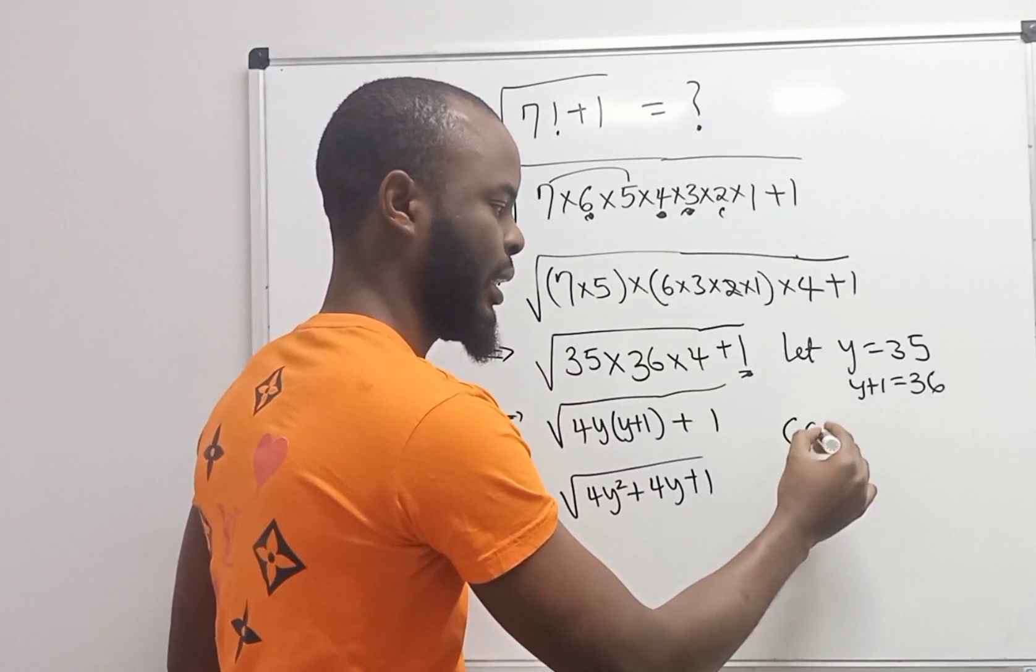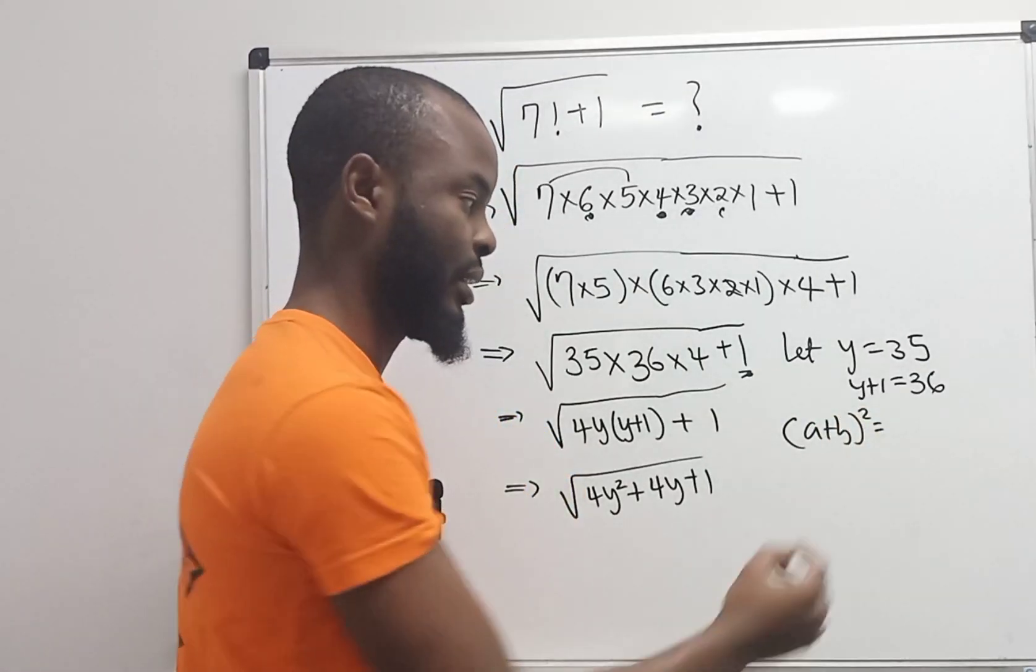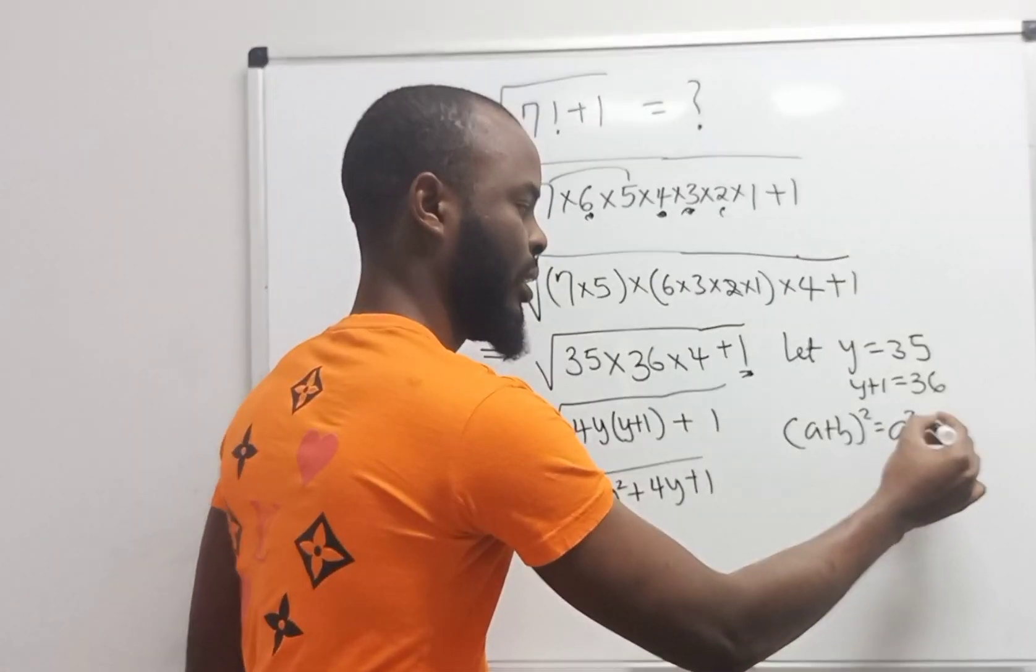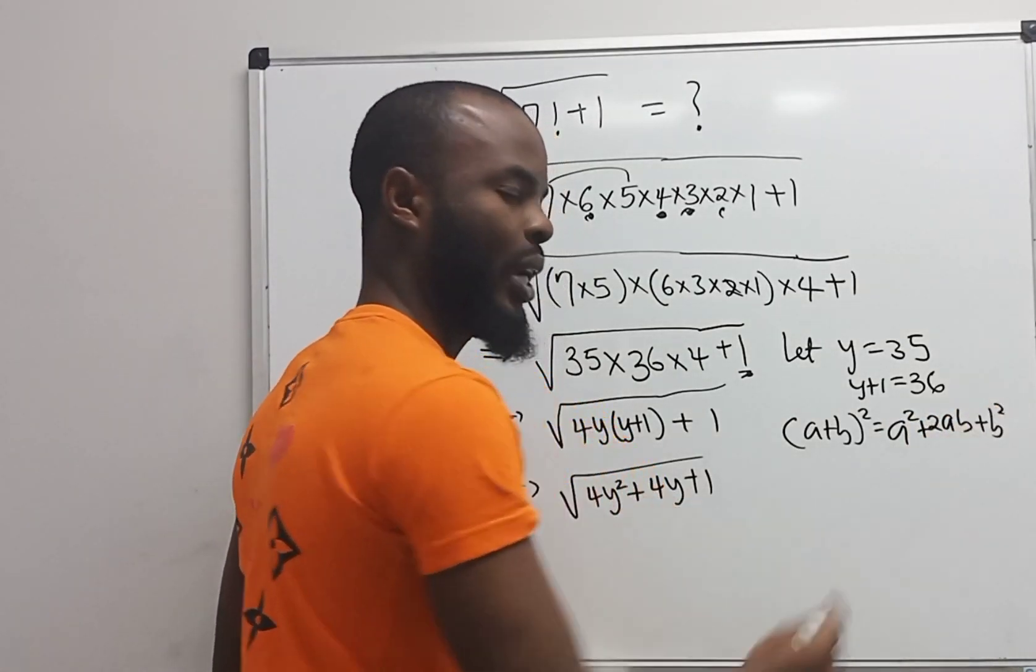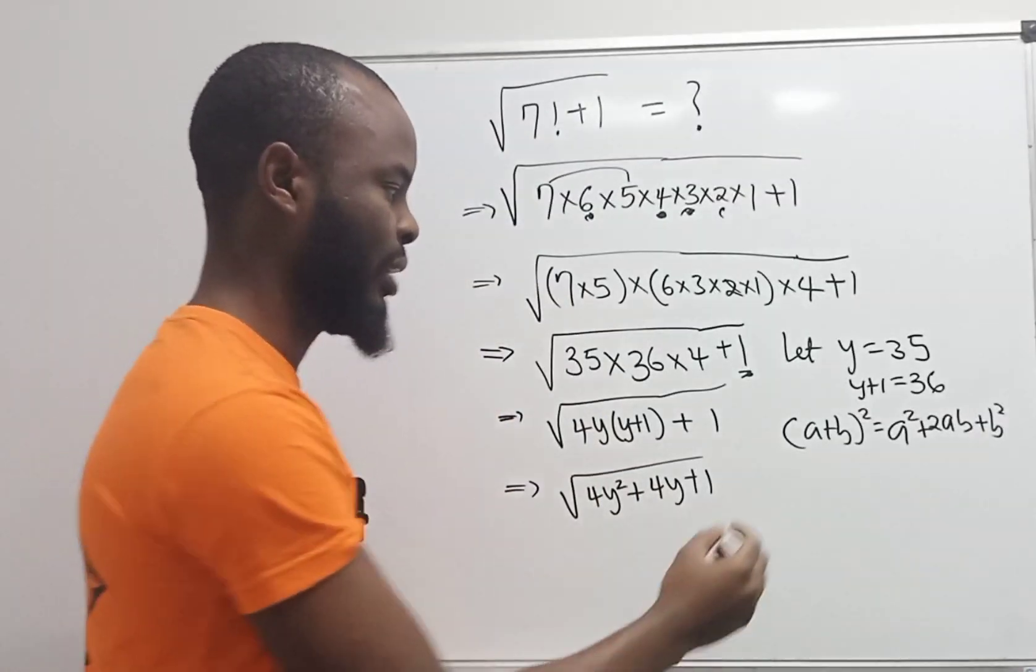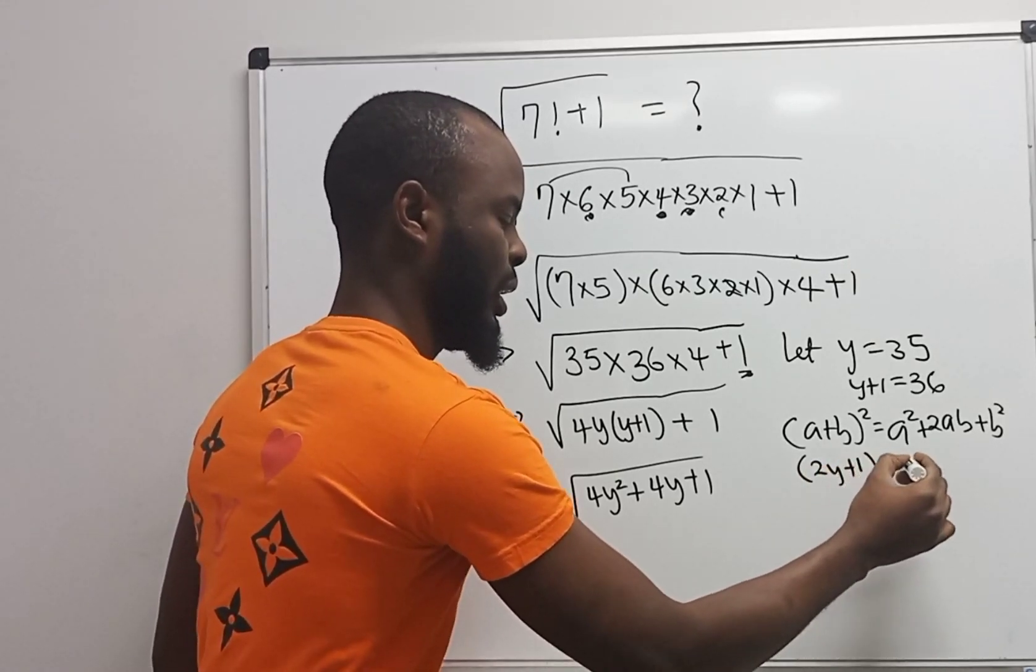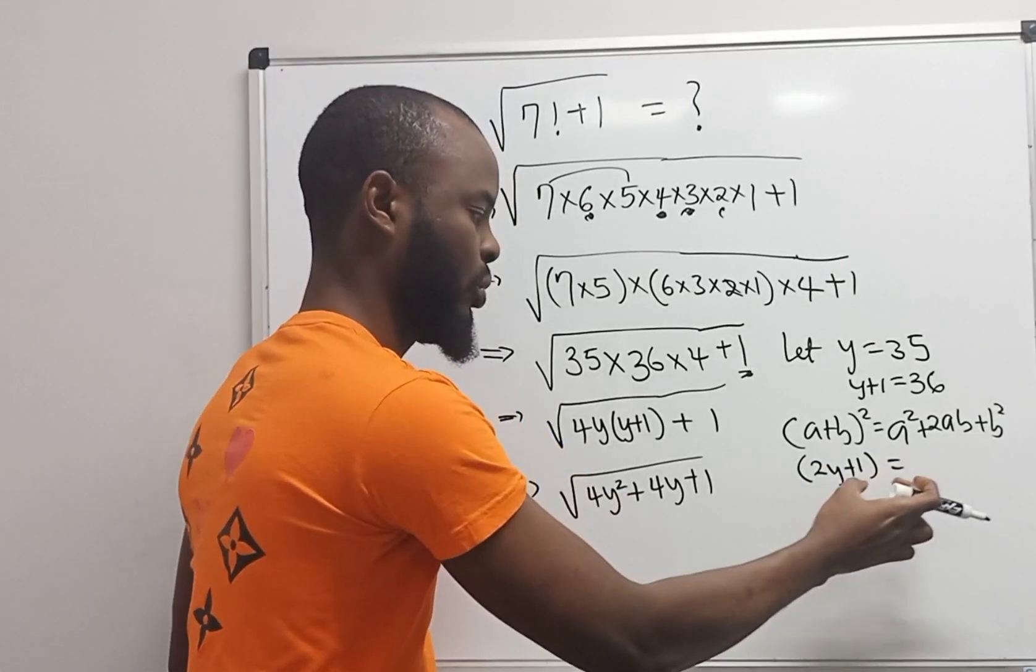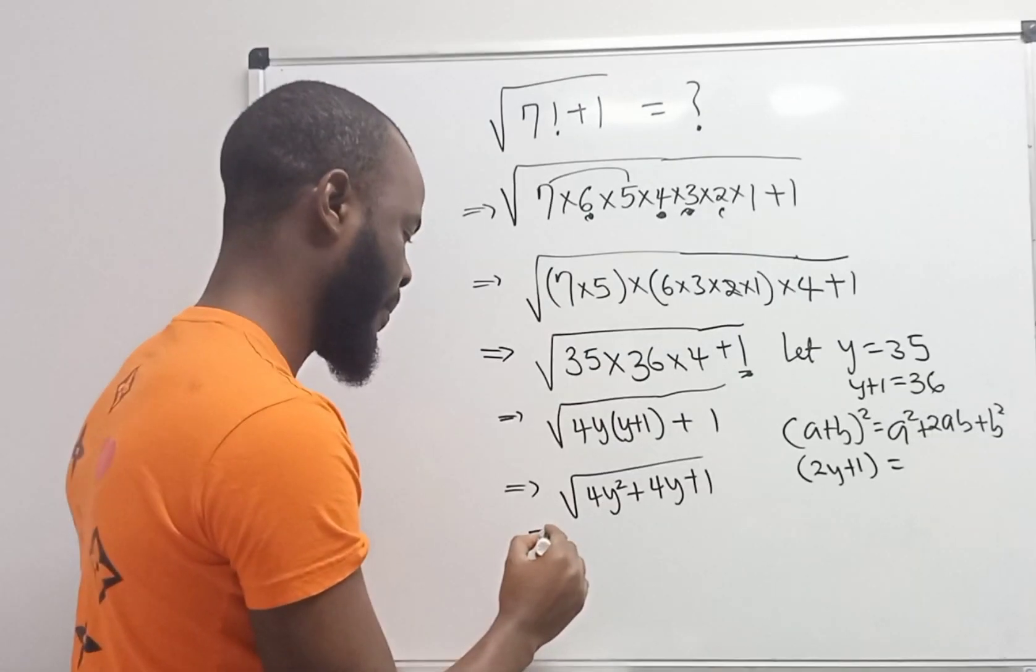Now looking at this, we can use the rule that says (a plus b) squared. Using the same rule to do this, I'm going to have this to be 2y plus 1. If you apply this rule, you're going to get it.